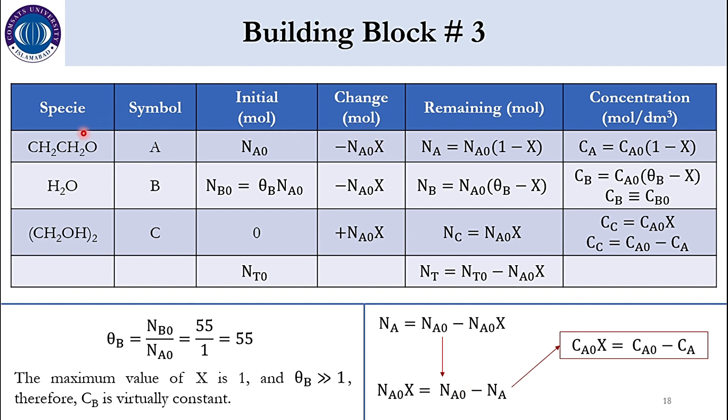Now applying stoichiometry which is building block number 3. As you can see ethylene oxide, water, ethylene glycol represented as species A, B and C. The initial mole for A is NA0. For B is NB0 and for C will be 0. And NB0 can be represented as θB NA0. The change will be minus NA0x. Again minus B over A. So B over A is 1. So minus NA0x. And C over A is 1 as well. So plus NA0x.